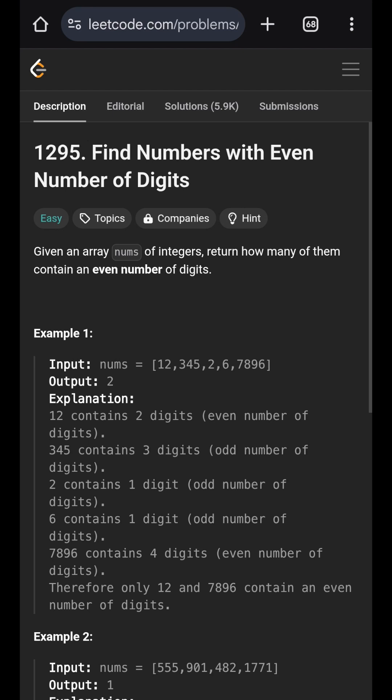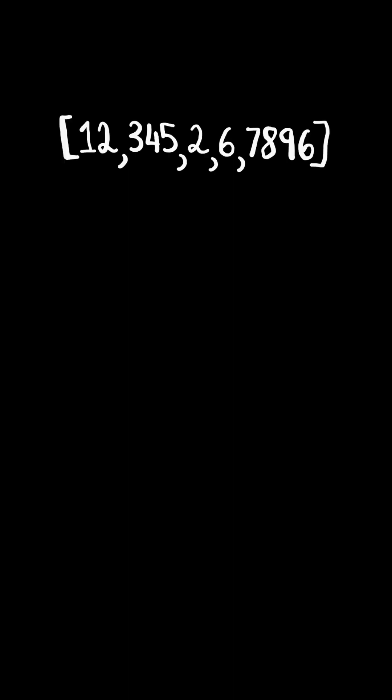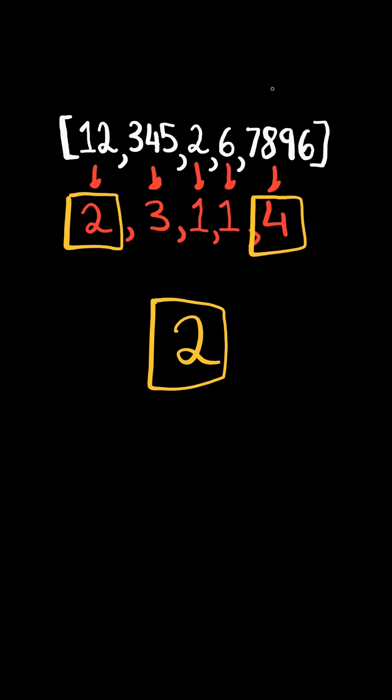Find numbers with even number of digits. Given an array of integers, count the number of digits in each integer, consider all the even number of digits, and return how many numbers contain an even number of digits.